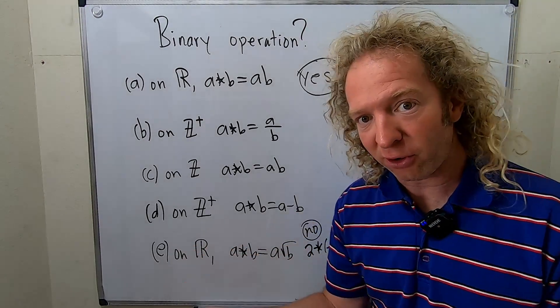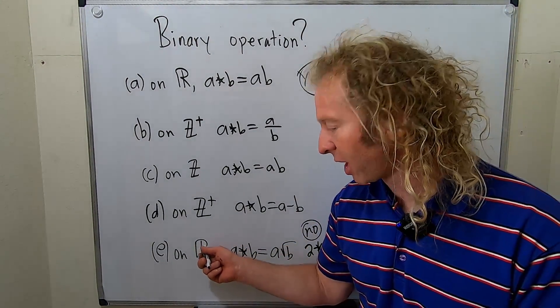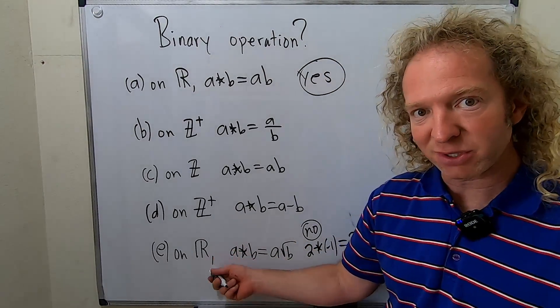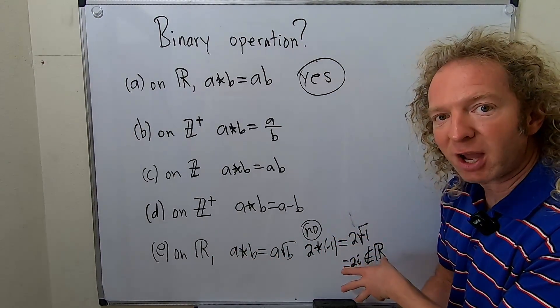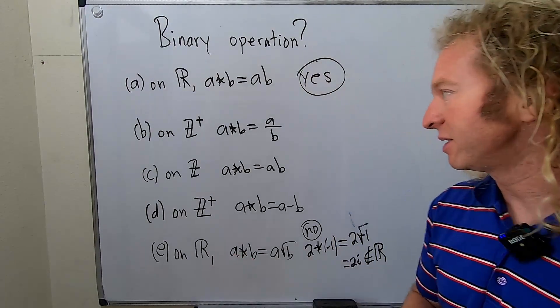So this is no, because it has to be true for all. If instead we change this to the complex numbers, then it would be okay. If this was the complex numbers, it's okay because we're allowing for complex numbers. So then it would be a binary operation. Kind of a nice example.